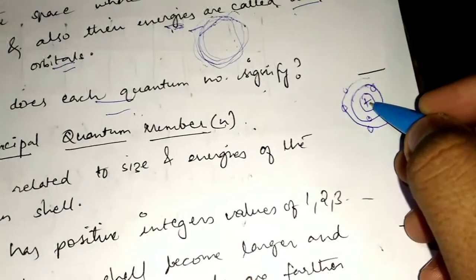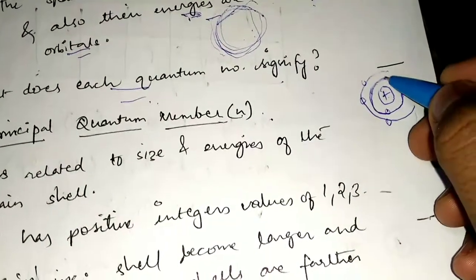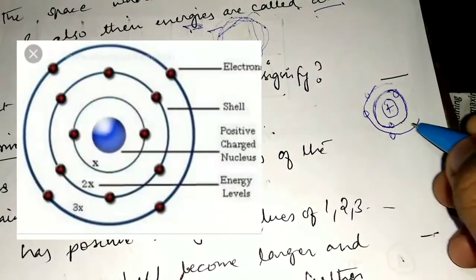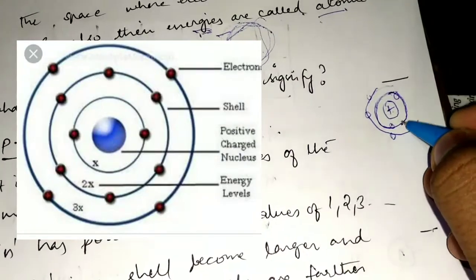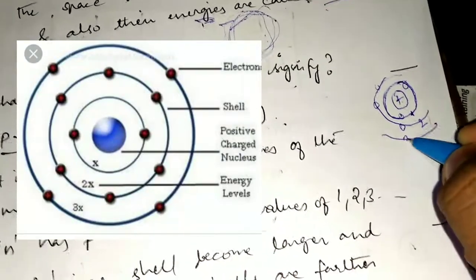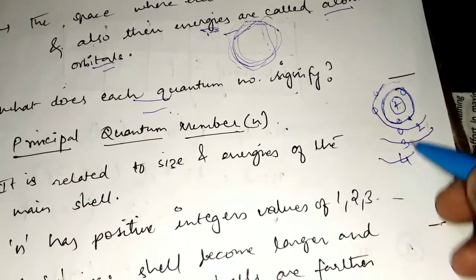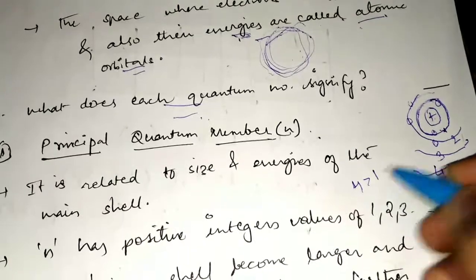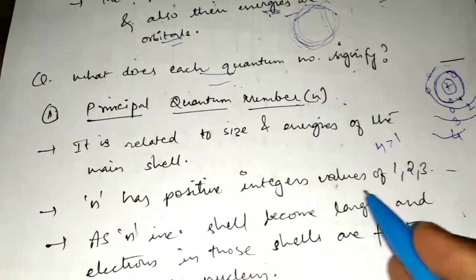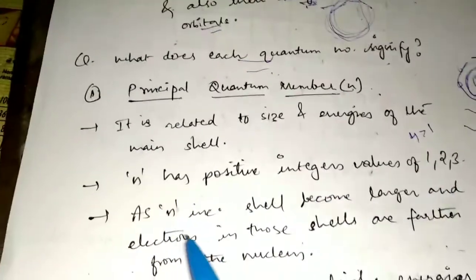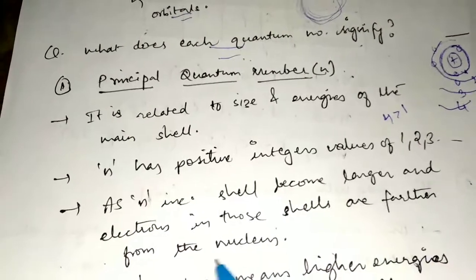This was given by Bohr's atomic model, where these are called shells. These shells represent the energy levels. As you increase the number of shells, the energy level also increases. So the fourth shell has more energy compared to the first shell. N has positive integer values starting from 1, 2, 3, and so on. As the N value increases, the shell becomes larger and electrons are farther from the nucleus.